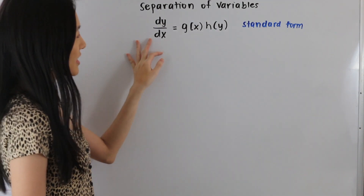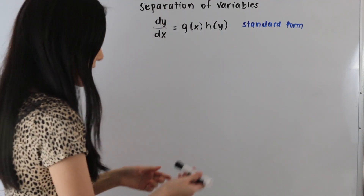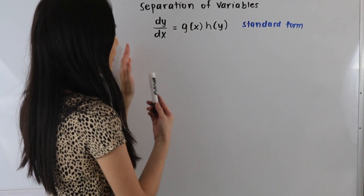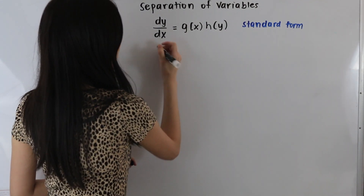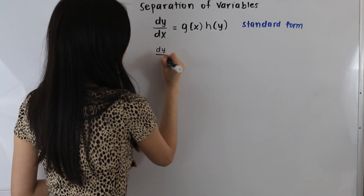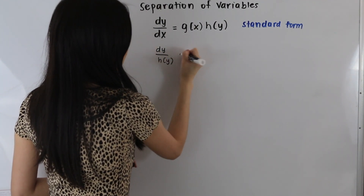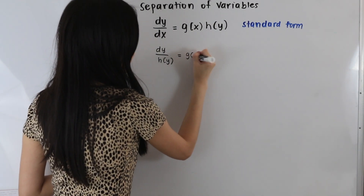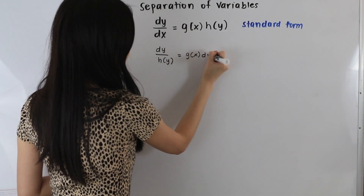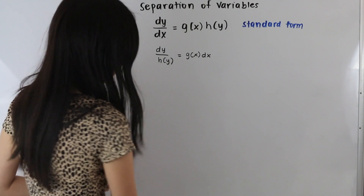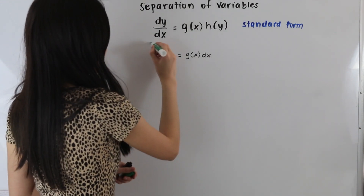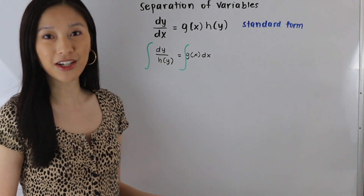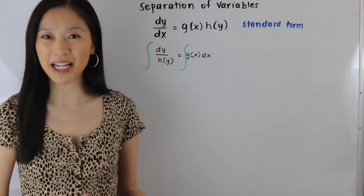In this case, we can go ahead and move all of our y's to the left hand side, so we would have dy over h of y, and then move all of our x's to the other side, so we would have g of x times dx. From here, we can actually integrate both sides and get our solution y to our differential equation. Let's go ahead and take a look at some examples.